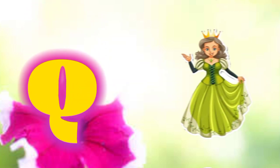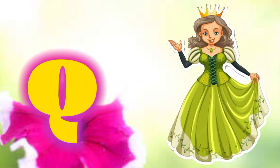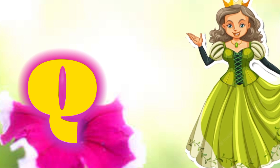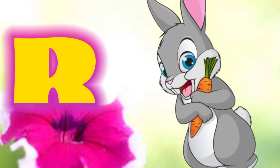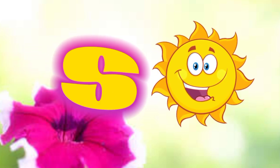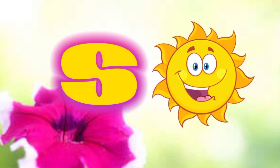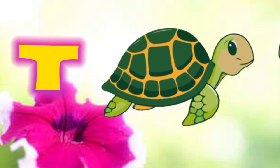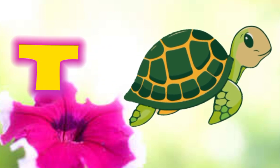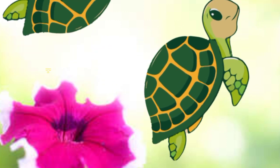Q is for queen, k-k-queen. R is for rabbit, r-r-rabbit. S is for sun, s-s-sun. T is for toad, t-t-toad.